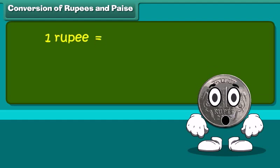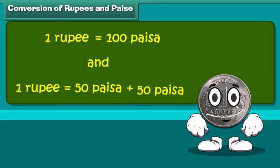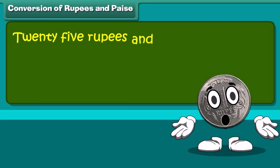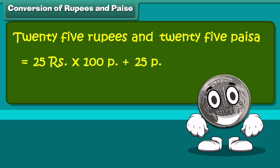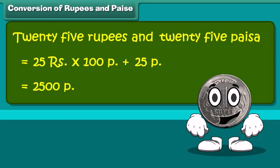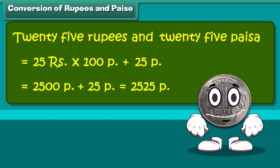1 rupee is equal to 100 paisa. 20 rupees and 25 paisa is equal to 25 multiplied by 100 plus 25 paisa. This becomes 2500 plus 25 paisa. We can say it as 2525 paisa. Amazing! So much money!